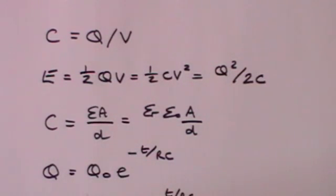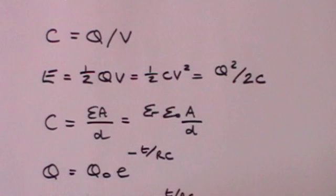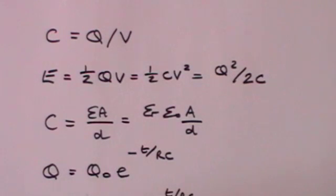Where a capacitor is made up of parallel plates which have an area A and a distance between them D, then the capacitance will equal epsilon times A divided by D, where epsilon is what's called permittivity. Epsilon can also be written as epsilon R times epsilon zero, where epsilon zero is the permittivity of free space and epsilon R is the relative permittivity if you've got something like a dielectric between the two parallel plates. You simply need to know what the relative permittivity is to free space.